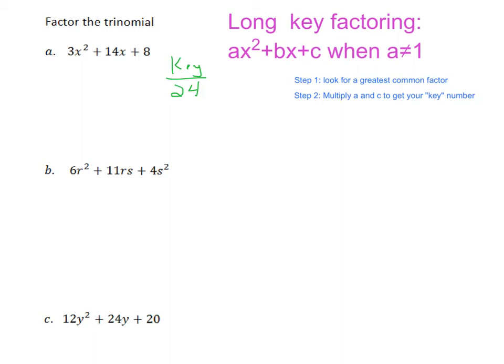So our factors of 24 are 24 and 1, 12 and 2, 8 and 3, 6 and 4. And I think that's it, right? So now let's go ahead and take a look and let's see what these add to. 24 plus 1 is 25, 12 plus 2 is 14. So we know that our factors that add to our middle term are going to be 12 and 2.